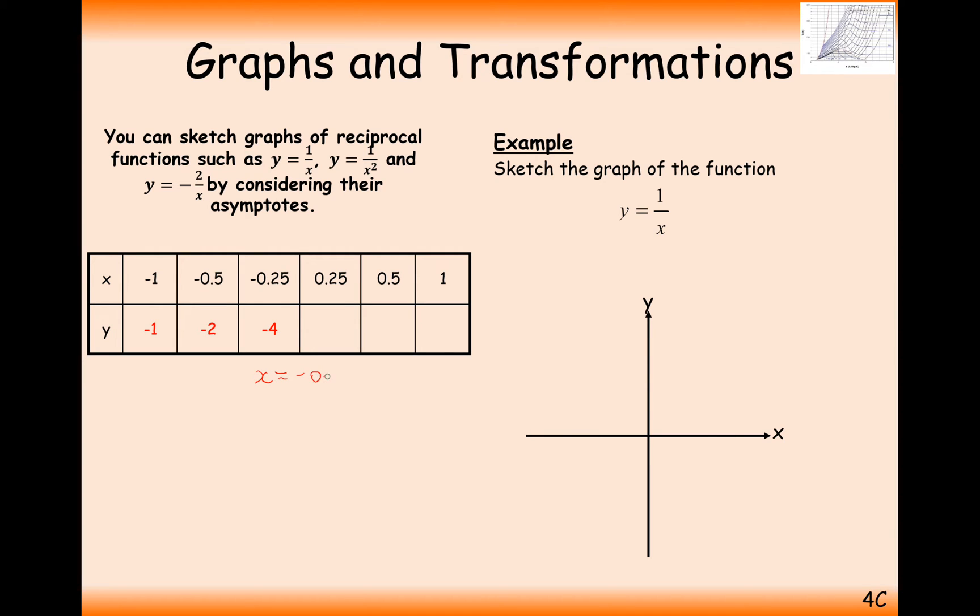Let's consider what y is going to equal when x is minus 0.001. The y coordinate in this case here is going to be minus 1 over 1 over 1,000. So in this case here it's going to be negative 1,000.